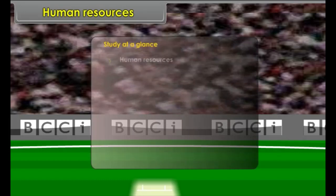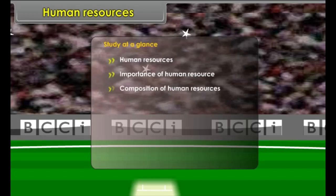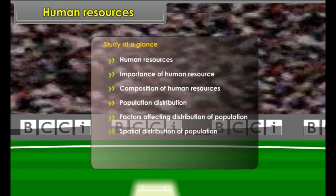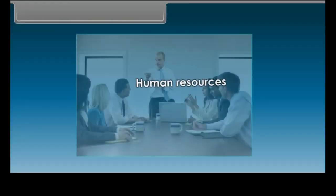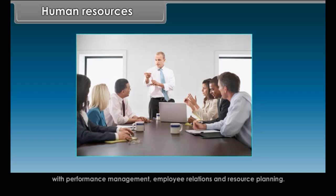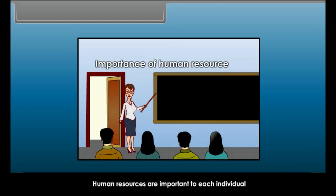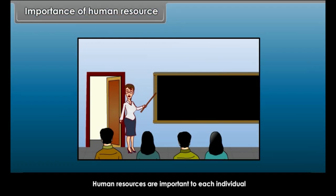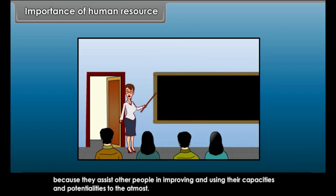Study at a glance: Human Resource, Importance of Human Resource, Composition of Human Resources, Population Distribution, Factors Affecting Distribution of Population, Spatial Distribution of Population, Density of Population, and Population Change. Human Resource is a term which describes the combination of traditionally administrative personal functions with performance management, employee relations and resource plans.